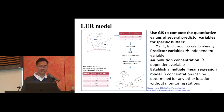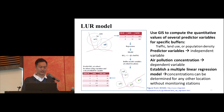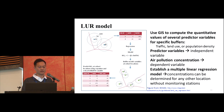This model uses GIS to compute the quantitative values of several predictor variables within spatial buffers. These predictor variables include traffic, land use, and population density. These variables serve as independent variables in a linear model, while air pollution concentration measured at monitoring sites is taken as the dependent variable. Once we establish a multiple linear regression model, we can use it to calculate the concentration at any location without a monitor station or measurement.